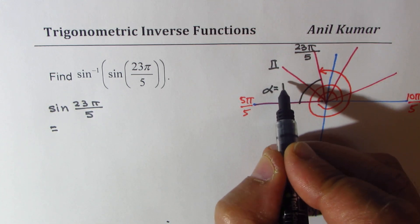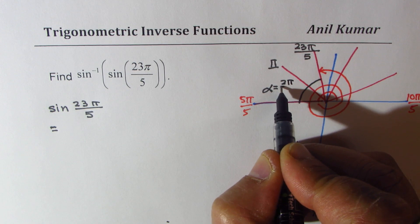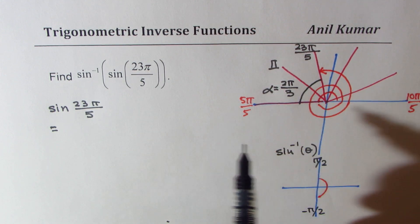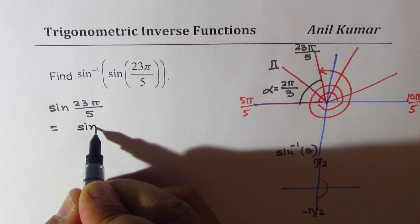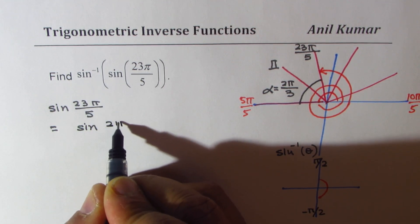is equal to 2π by 3, right? So sine 23π by 5 is actually equal to sine 2π by 5.